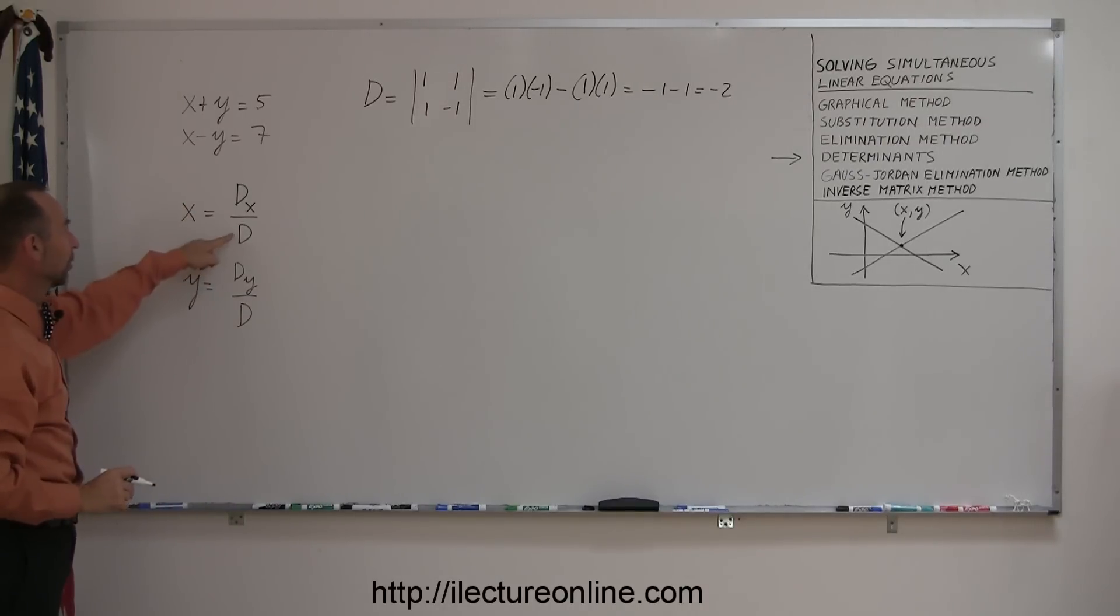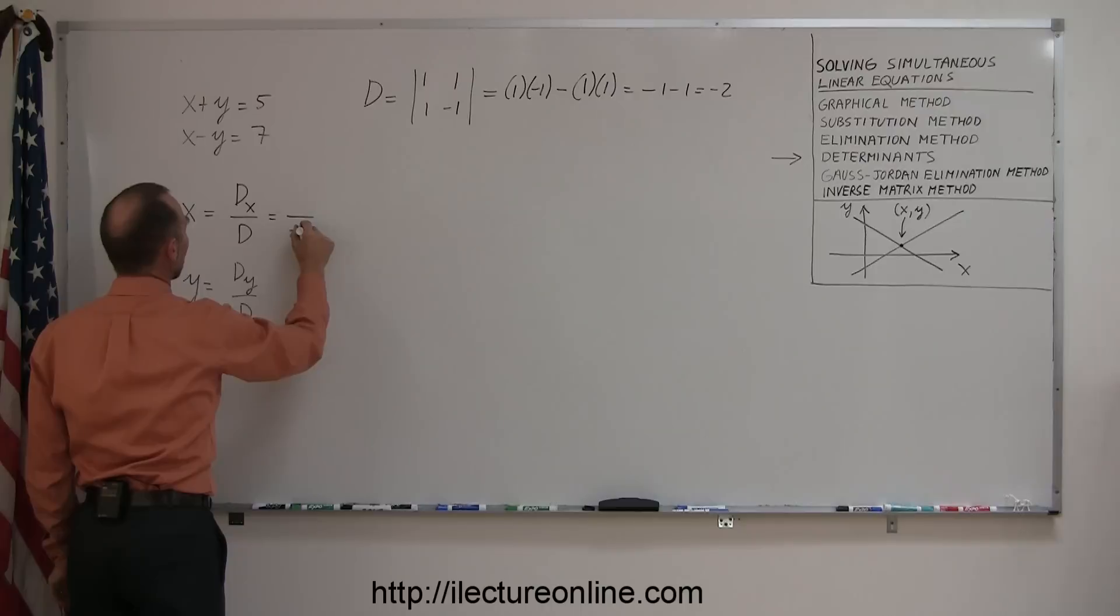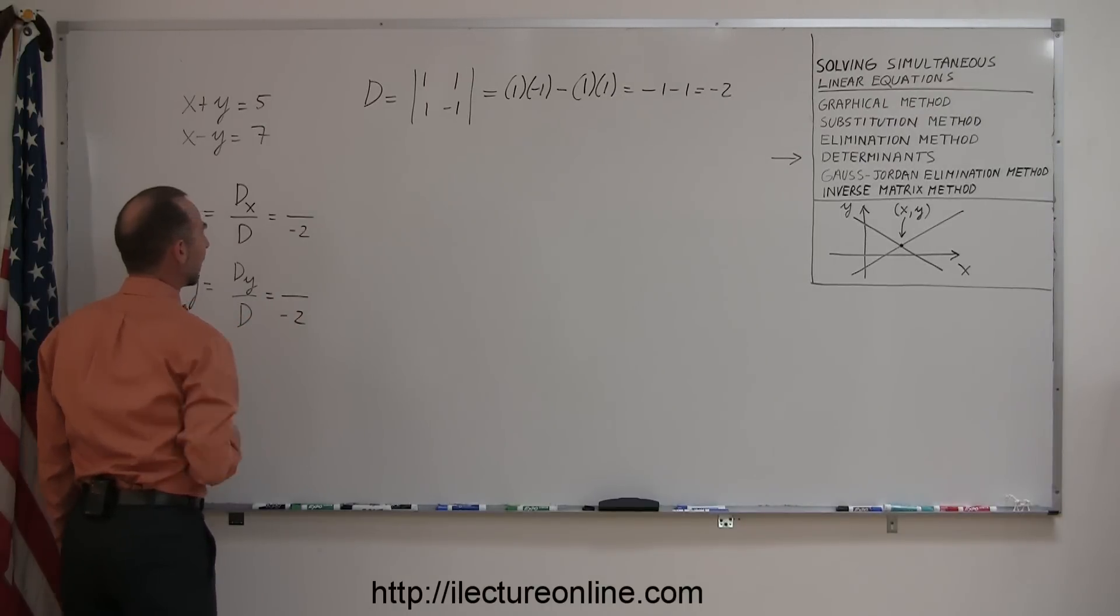That goes into the denominator of each of these two fractions. So the denominator is going to be minus 2 for both x and y.